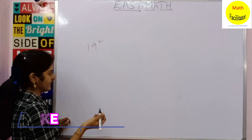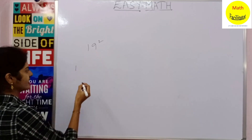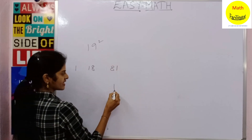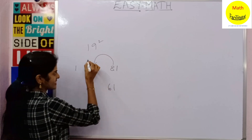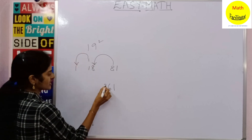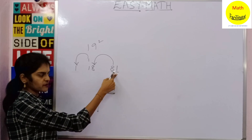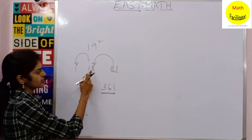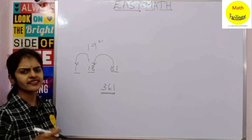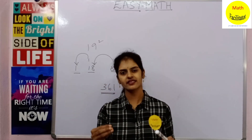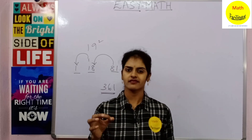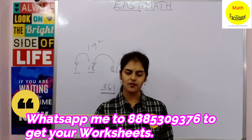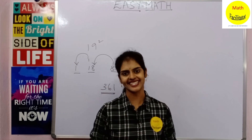Now let us take 19²: write 1, then 9 + 9 = 18, then 9 × 9 = 81. Balancing: write 1, carry 8 and add to 8 giving 16, then 1 + 1 = 2 added to the leading 1 gives 3. So 19² = 361. We can only accommodate one digit in each place, so we transfer the extra digit to the next position — that is the balancing we are doing. This method is super simple; just concentrate and practice once.